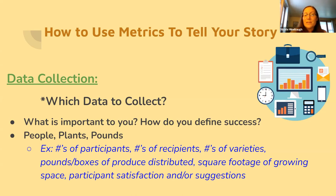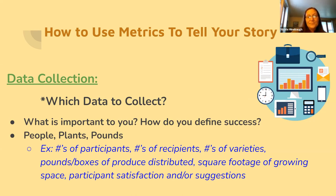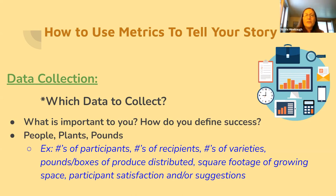One way to think about data collection is people, plants, and pounds. People — the number of participants in your garden or recipients of food. Plants — numbers of varieties grown or square footage of growing space. Pounds — how many pounds or boxes of produce have been distributed. Participant satisfaction is another measure of success and a useful evaluation tool that you can also report back to funders and other stakeholders.